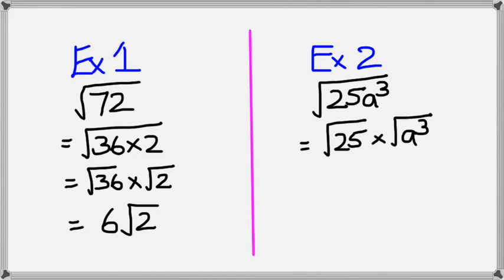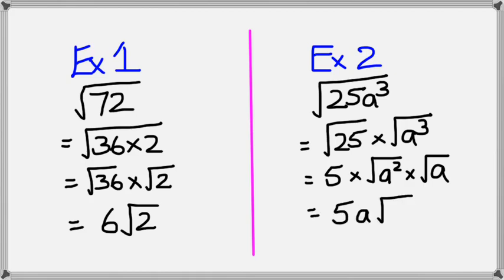Square root of a cubed you can separate it further. Let's actually do the square root of 25 first, so that's 5. Square root of a cubed could be separated as a squared and square root of a by itself. We know that square root of a squared becomes just a, and the square root of a remains as it is.